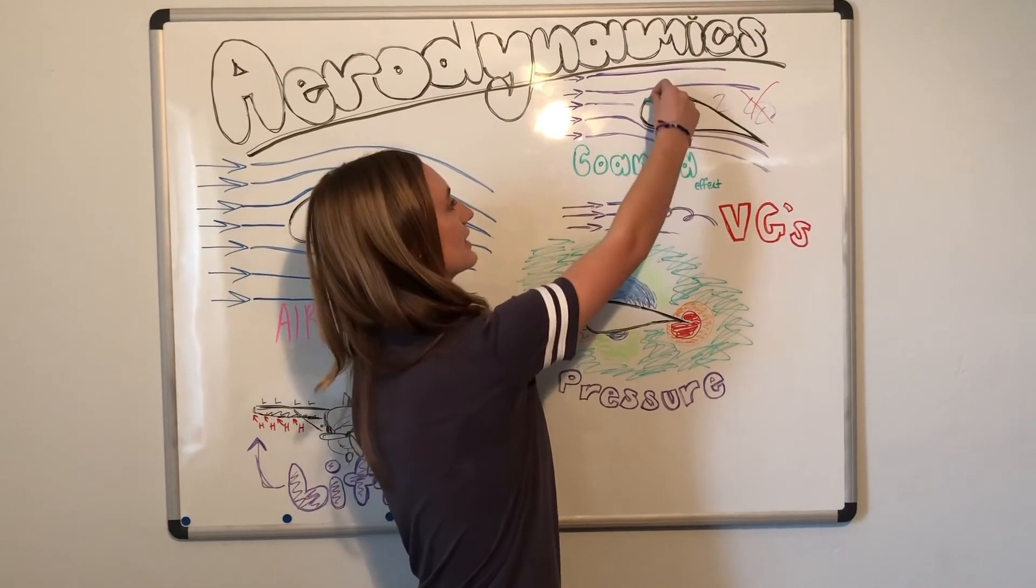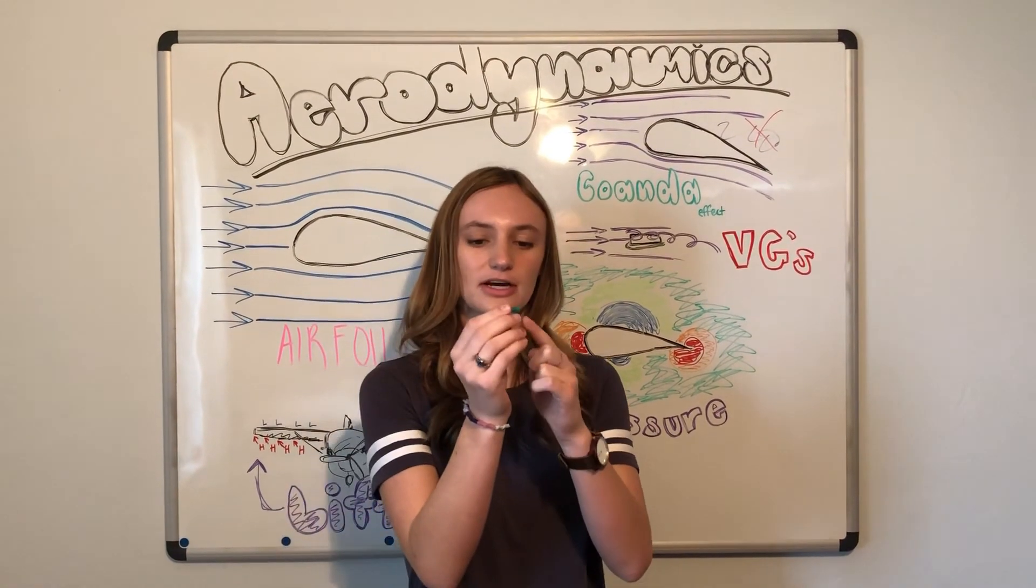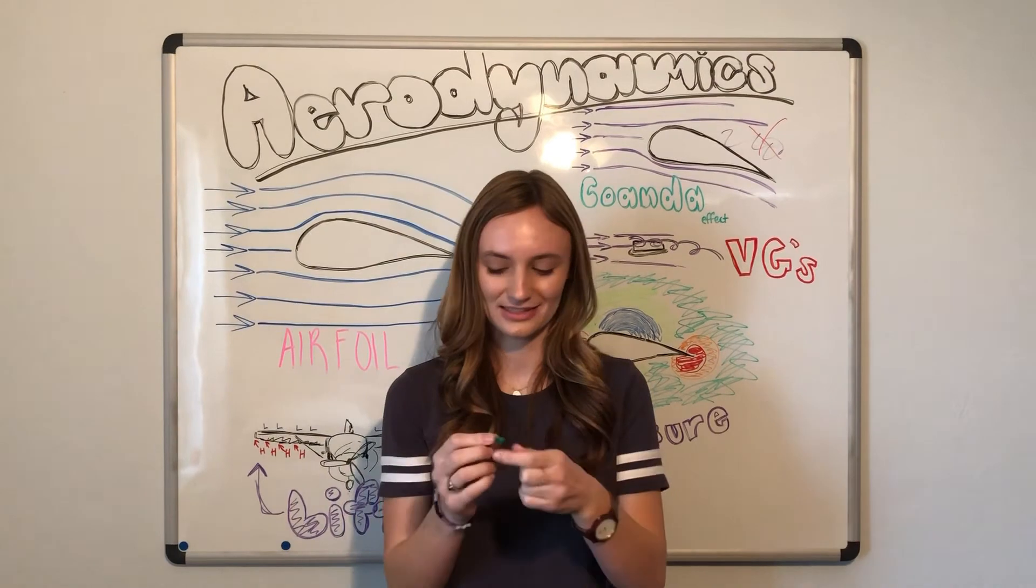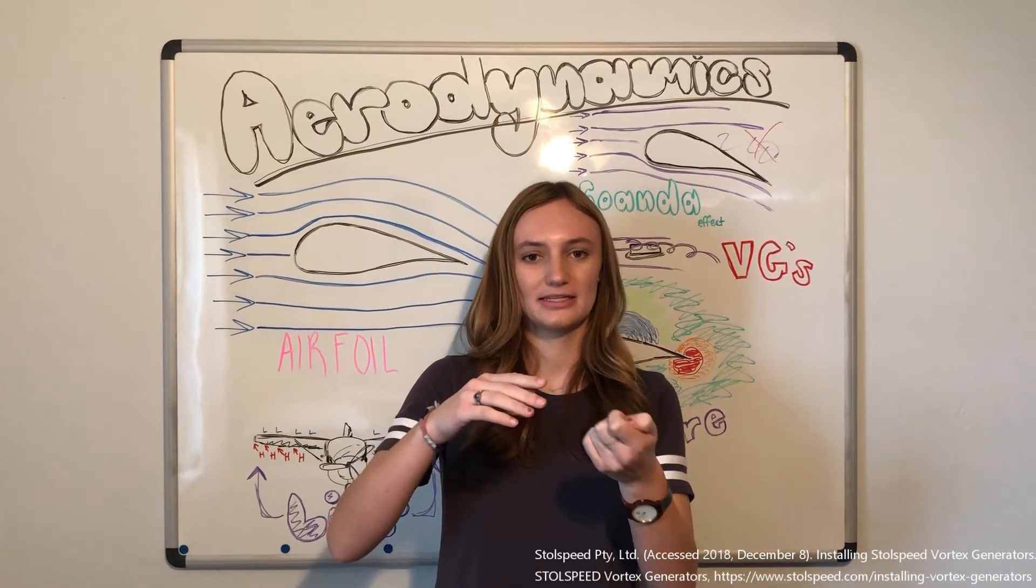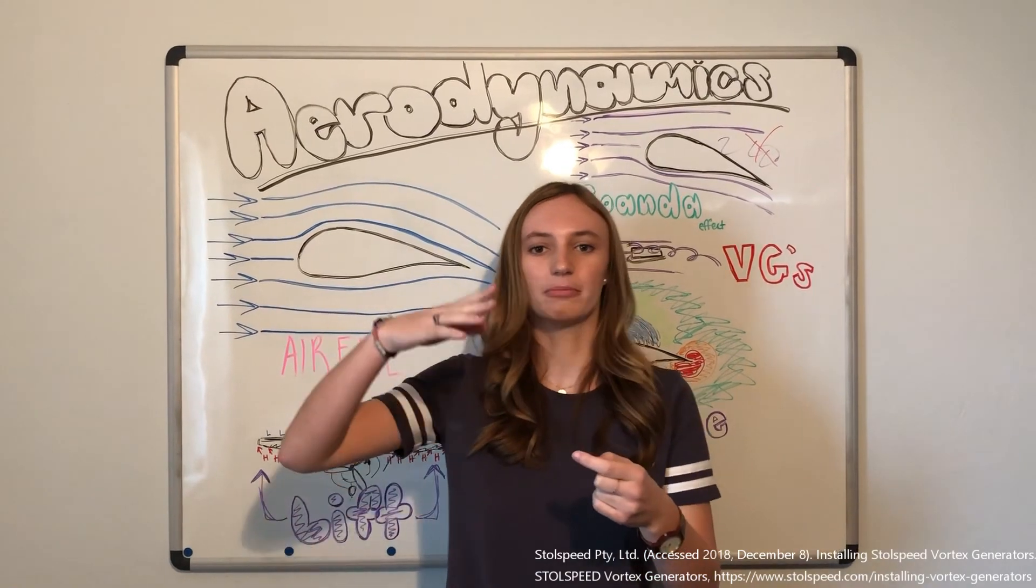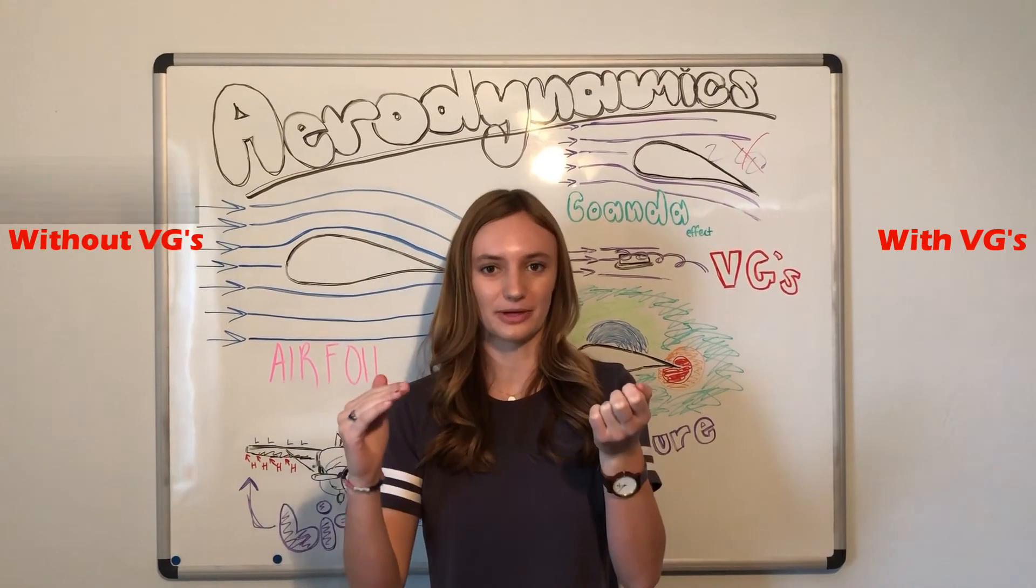Vortex generators are attached to the leading edge of the wing at a slight angle, so that when the air moves across it, it causes it to roll over it, generating a vortex. This vortex mixes the boundary layer of air, which is high pressure, with the lower pressure air above, keeps it moving at the same speed, and follows the wing without sticking to it.